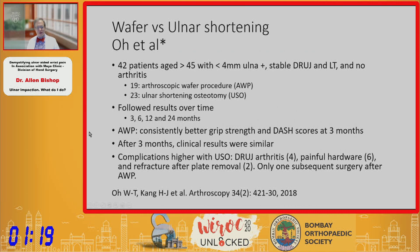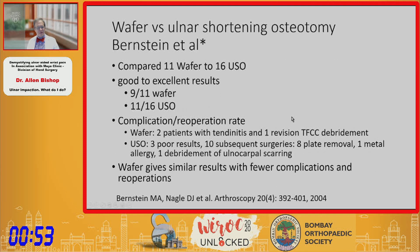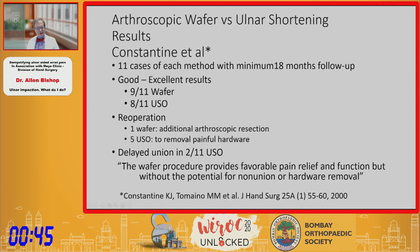A study by Oh of 42 patients found that at three months the wafer procedures were consistently better, and after three months clinical results were similar, but complication rates were much higher with shortening — including arthritis, painful hardware, delayed non-union, and refracture after plate removal — complications simply not seen in wafer procedures. Another study by Bernstein showed similar results with fewer complications. A study by Constantine showed nine of eleven excellent results with wafer versus eight of eleven with ulnar shortening, but with only one additional resection needed in the wafer group versus five hardware removal operations and two delayed unions in the shortening group.